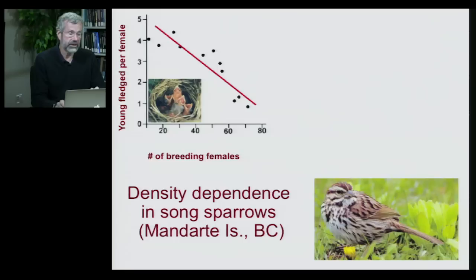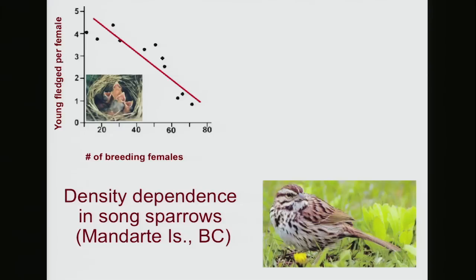In years when population density is really low — that is, only a few breeding females are present on the island — the number of offspring fledged, that is, the number of eggs reared up to chicks that can then leave the nest, is really quite high. They might have four offspring flying off from their nest each year. But when population density is high, with above 60 females on that same small island, the reproductive rate is much, much slower — only one offspring on average per year.